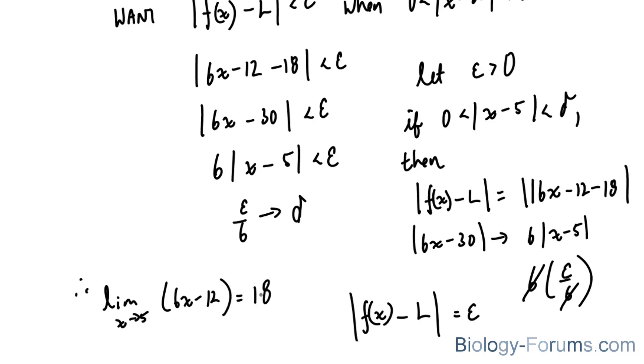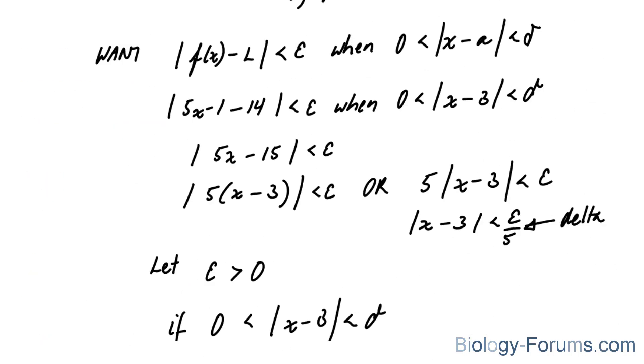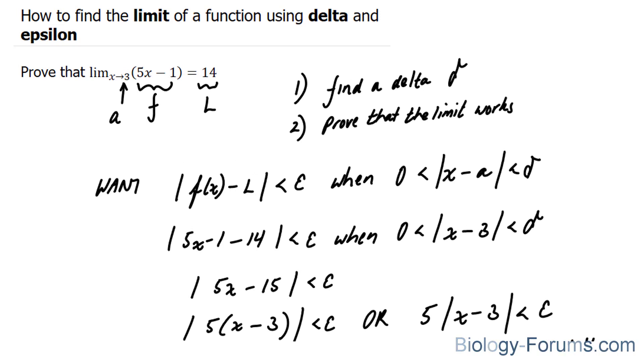And there you have it. That is how to prove that the limit exists using epsilon and delta. If you found this tutorial helpful, please support our channel by subscribing or by liking this video. If you have any further questions, you may visit our website at biology-forums.com. We are an online service for students seeking free homework help. See you soon.